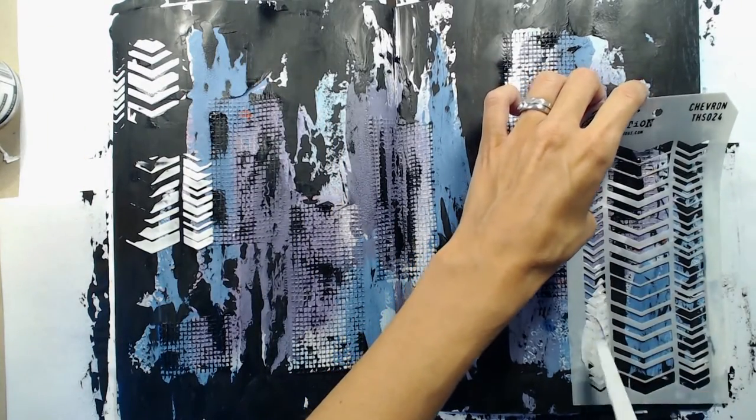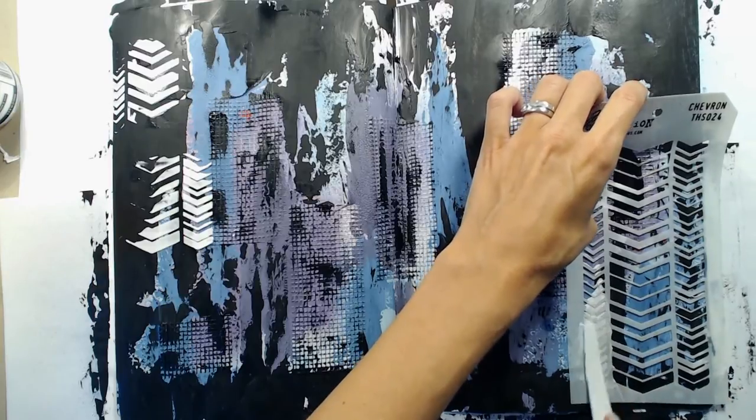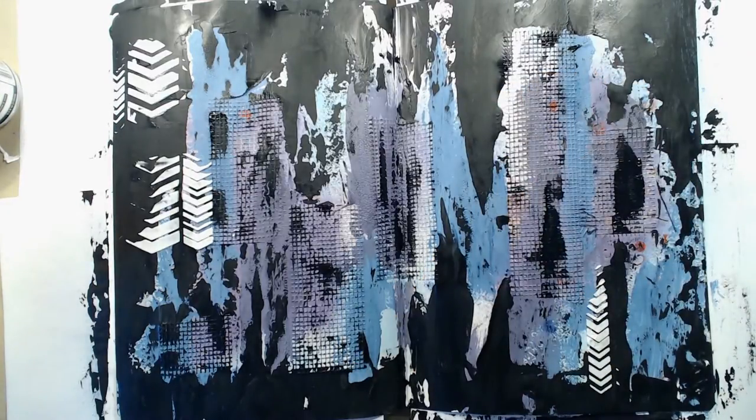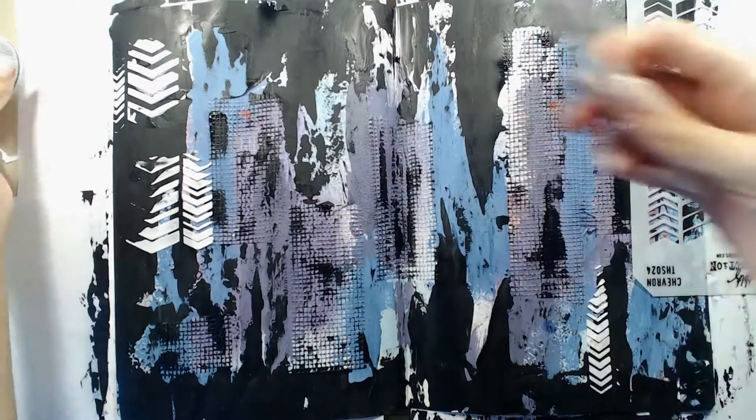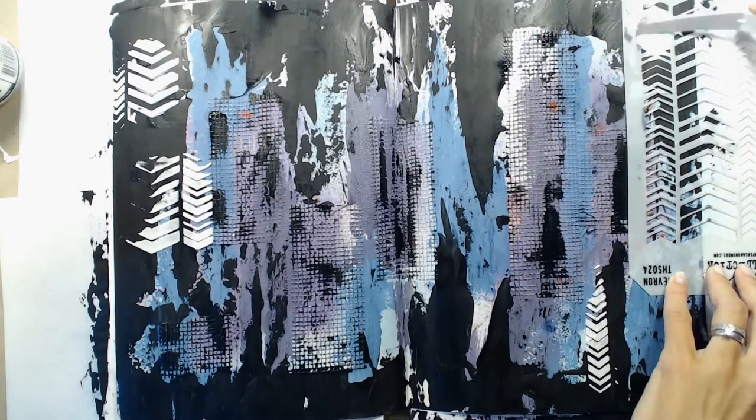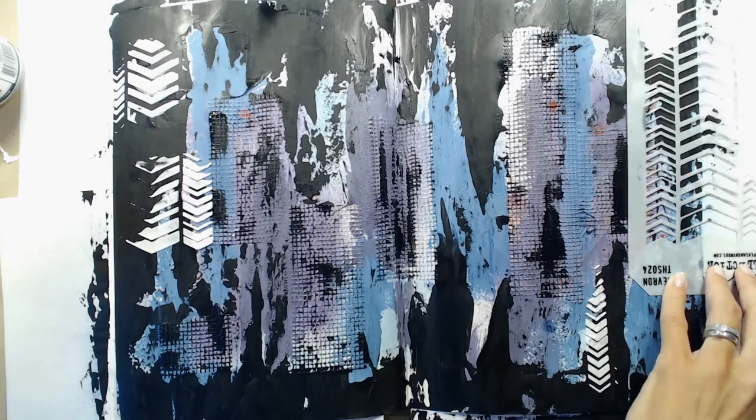So I used a stencil from Tim Holtz and added the paste around the page using my palette knife. Luckily it all worked out and I managed to get a crisp white image on top of the black.